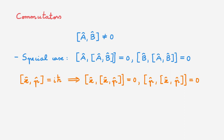In this special setup, the commutator of A with the nth power of B is equal to n times the commutator of A with B, times B to the power of n minus 1. We will now prove this relation.